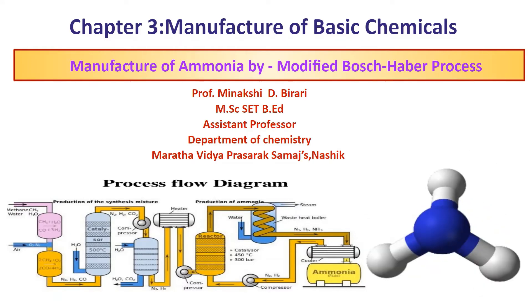In the previous lecture, we studied the manufacture of ammonia by Haber process. The main limitation of Haber process is that the yield of ammonia is low, about 8%, whereas the yield of ammonia by Bosch-Haber process is about 19%. So Bosch-Haber process is preferred over Haber process. Let us see in detail the manufacture of ammonia by modified Bosch-Haber process.